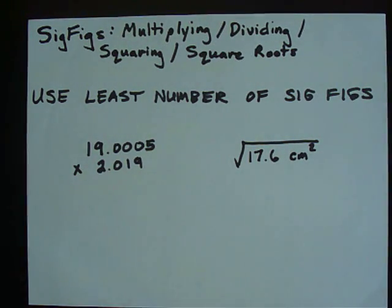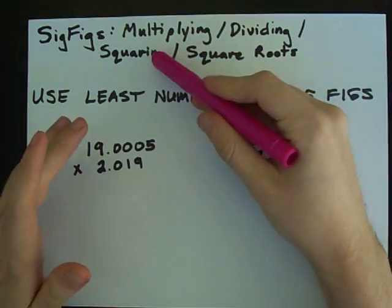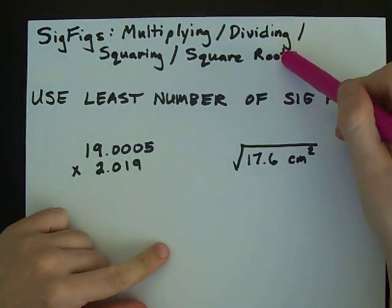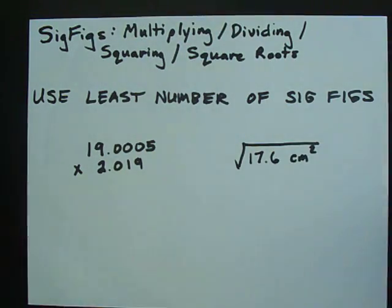How to calculate the number of significant figures when you're multiplying, dividing, squaring, or taking the square root of something: use the least number of significant digits in any of the numbers that you're using.